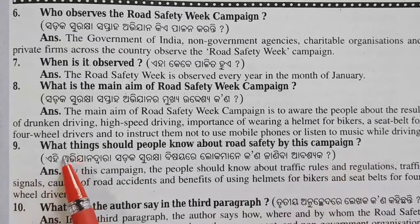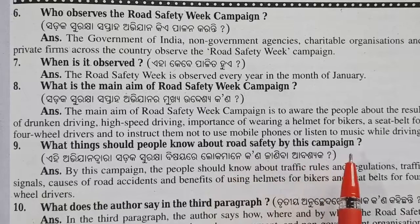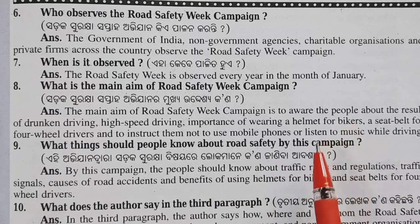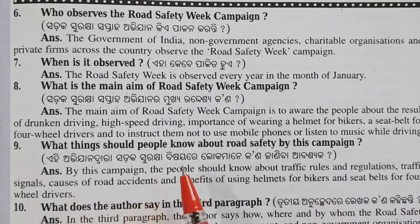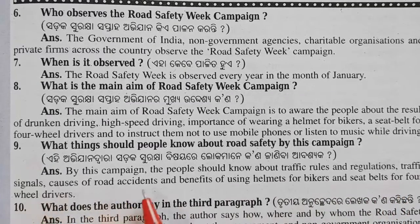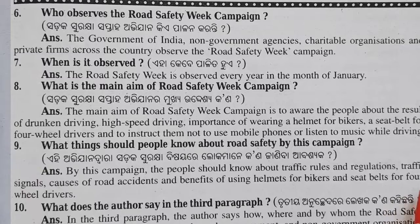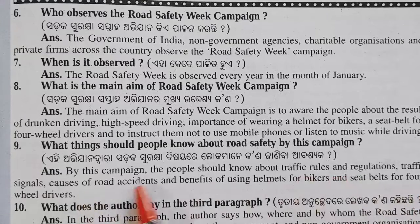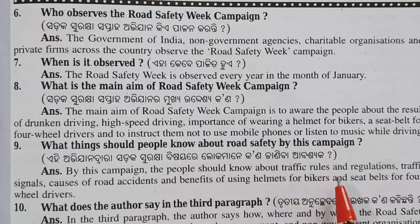Question 9: What things should people know about road safety through this campaign? The people should know about traffic rules and regulations, traffic signals, causes of road accidents, and the benefits of using helmets for bikers and seat belts for four-wheeler drivers.